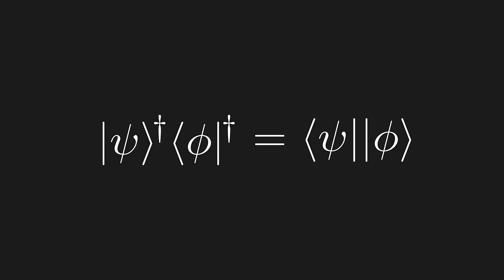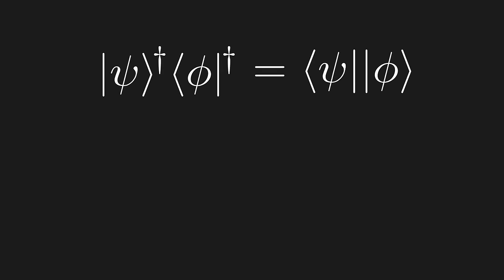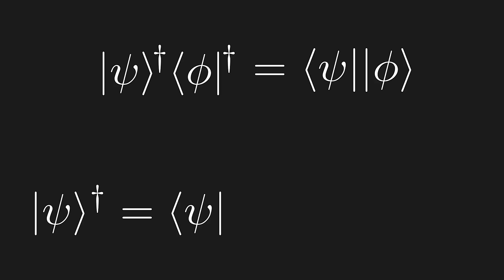This expression and the one we previously found must both be equal. Since phi and psi are both completely arbitrary, this seems to point to the fact that the Hermitian adjoint of a ket is a bra, and the Hermitian adjoint of a bra is a ket.